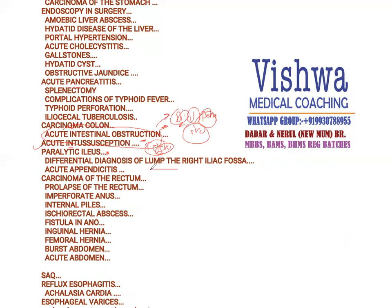Lump in the right iliac fossa — this is an appendicular mass. Chronic appendicitis can develop into an appendicular mass. For acute appendicitis, remember there is McBurney's triad, McBurney's point, McBurney's incision, and you should know the steps of appendectomy.